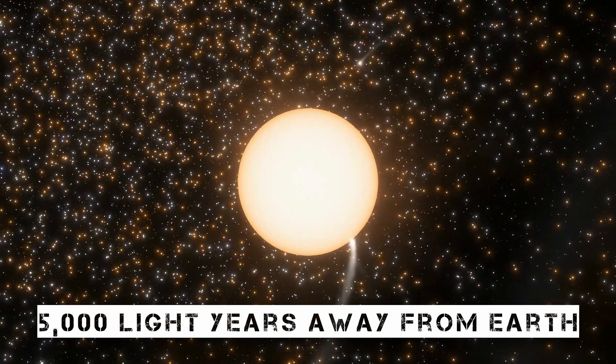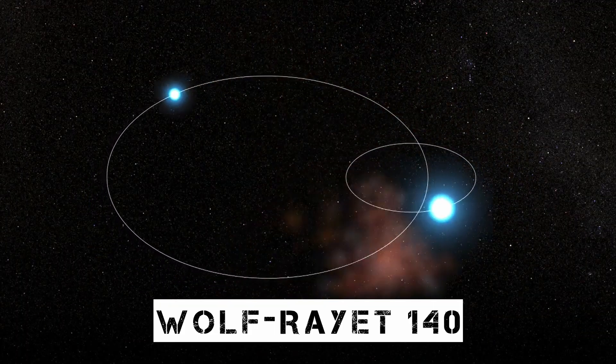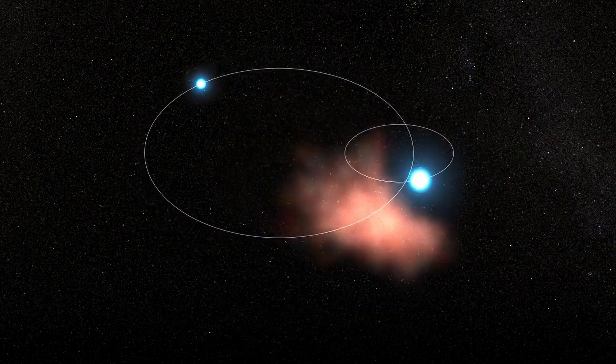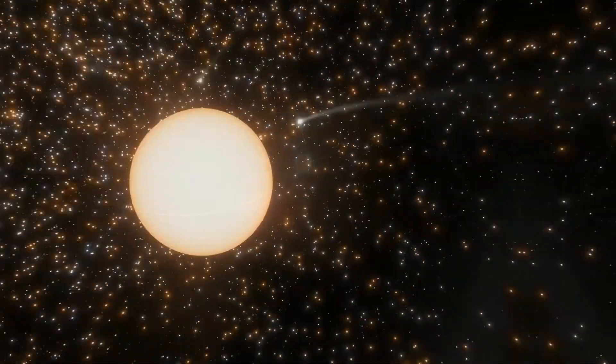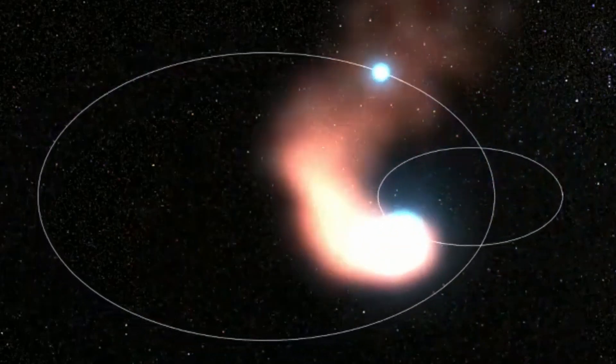More than 5000 light years away from Earth, two massive stars, known as the Wolf-Rayet 140 binary, collided to form the formation. Every eight years, when the stars move further apart in their elongated orbit, the rings are formed. The solar winds from the stars meet as they get closer to one another, compressing the gas pouring from the stars into dust.